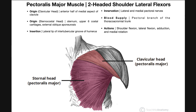The major action that we normally think of with pectoralis major is shoulder lateral flexion, making it a two-headed shoulder lateral flexor. Generally we think of two major heads: the clavicular head and the sternocostal head, but sometimes the abdominal head is referred to as well. Let's take a look at the origin, insertion, innervation, and blood supply, and then the action we'll save for the next slide.